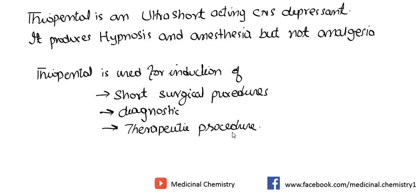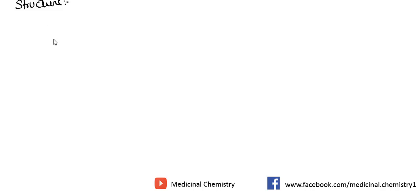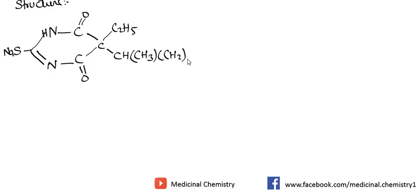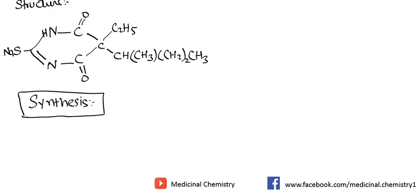Now we are going to discuss its chemistry. The first thing is structure. The structure of thiopental sodium has a sodium carbonyl carbon, then a carbon, then again a carbonyl carbon, then a nitrogen bonded with carbon and sulfur sodium. The first adjacent carbonyl carbon is surrounded by C2H5, and then we have CH, CH3, CH2, CH2, CH2, and CH3. This is the basic structure of thiopental sodium.